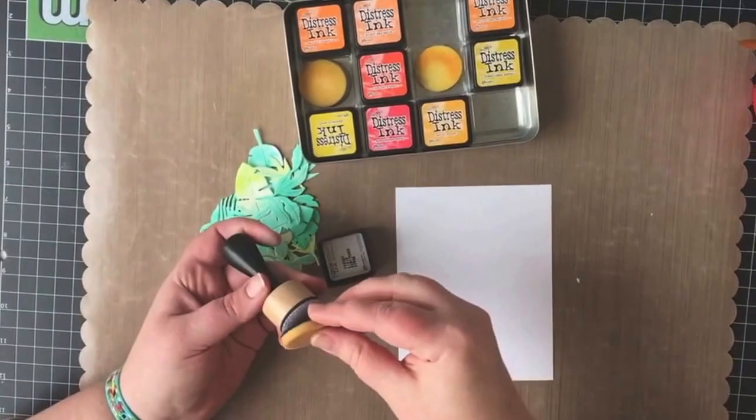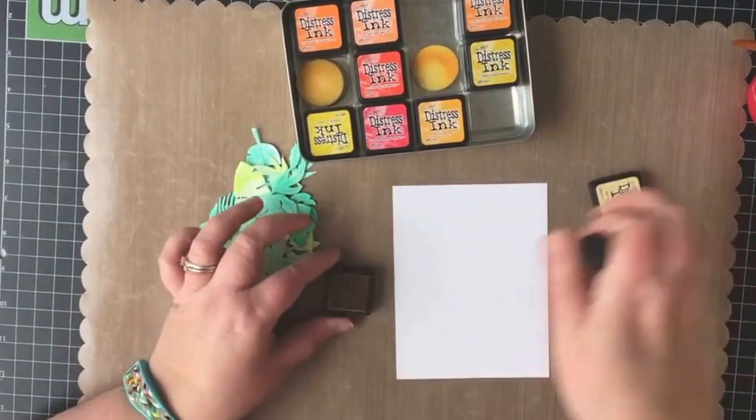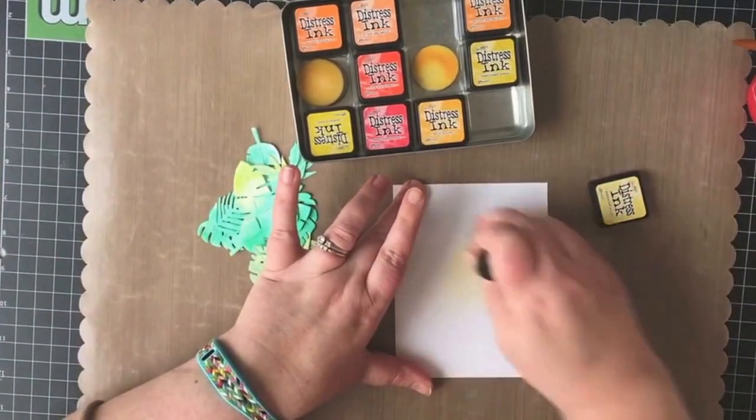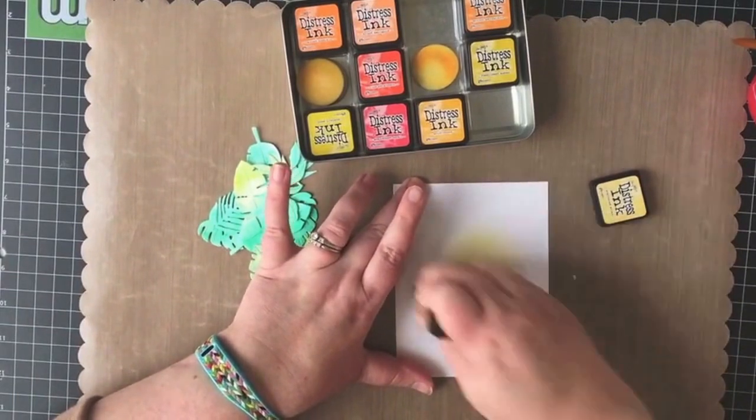Now you can see the pile of pretty leaves that I've cut with the greenery die using the watercolor cardstock that I just created.